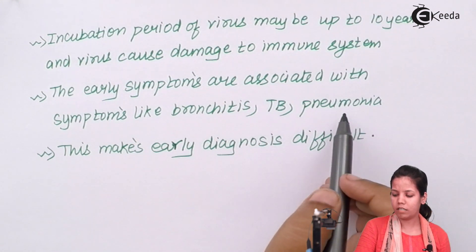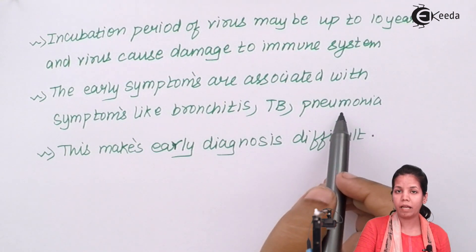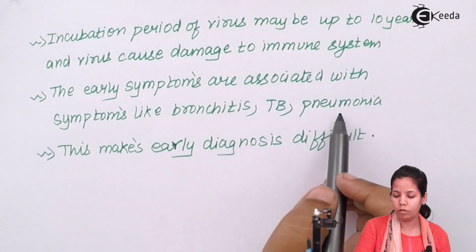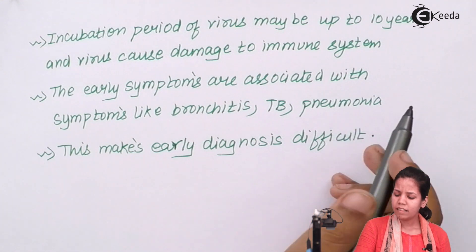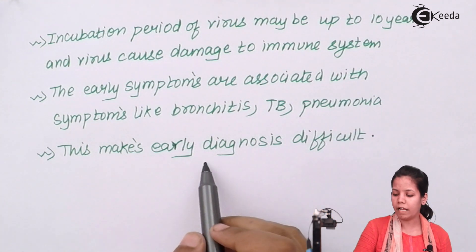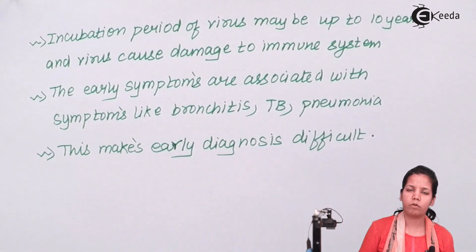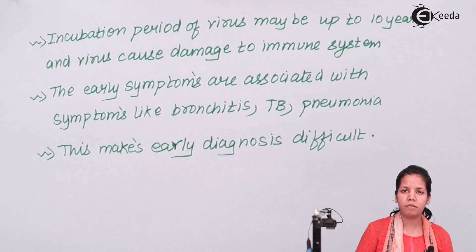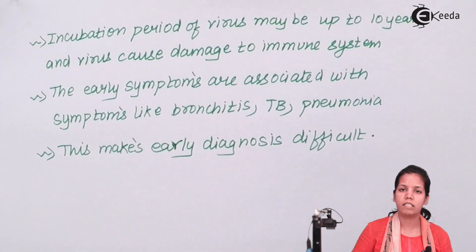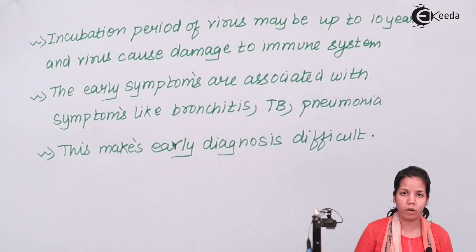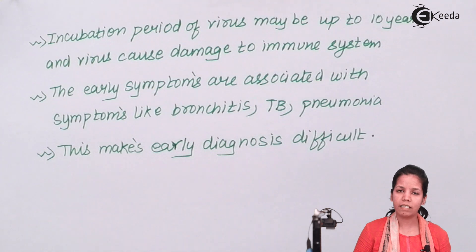In certain cases it can be associated with pneumonia. This makes early diagnosis of AIDS difficult because the early symptoms are very similar to other diseases like tuberculosis, pneumonia, and bronchitis, making the tests even more difficult.